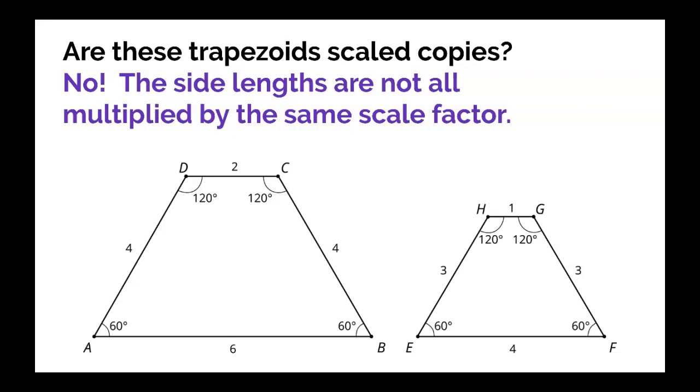For instance, that top DC is 2, it's multiplied by a half to get to HG. But then 4 multiplied by a half would get you 2, not 3, which is the side length. So that's three-fourths as big, not the same scale factor.